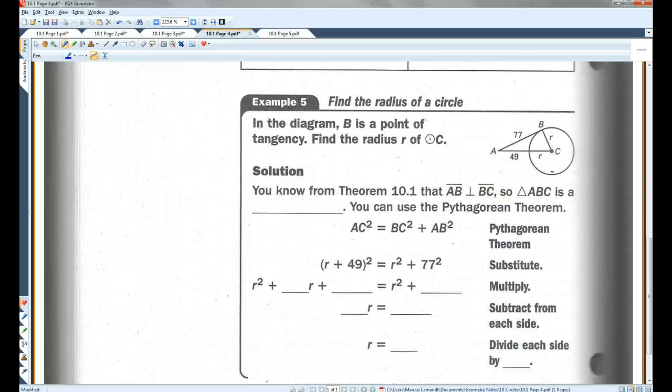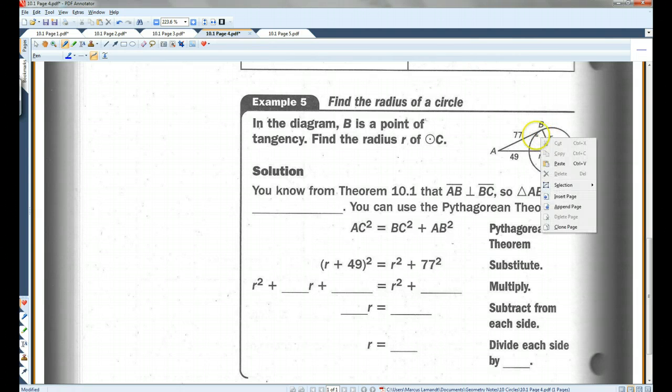In the diagram, B is a point of tangency. Find the radius R of circle C. They're telling us that this is a right angle. We know from theorem 10.1 that AB is perpendicular to BC. So, triangle ABC is a right triangle. You can use the Pythagorean theorem. So, C squared equals A squared plus B squared.